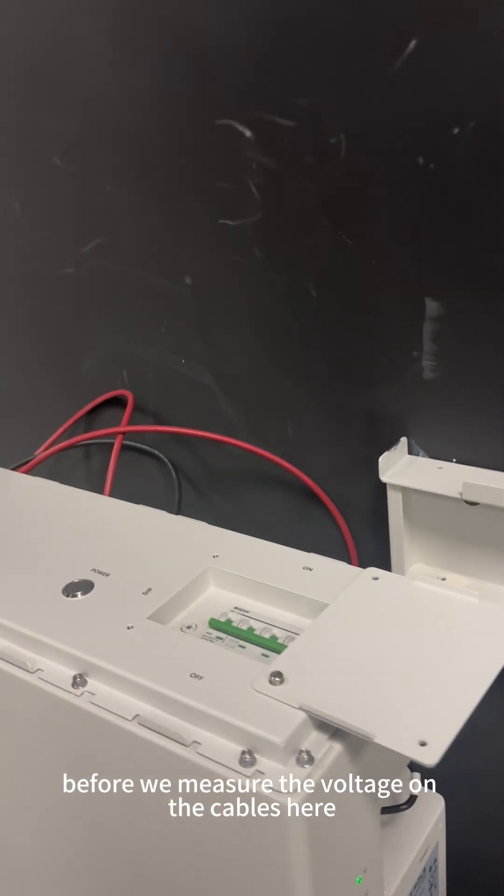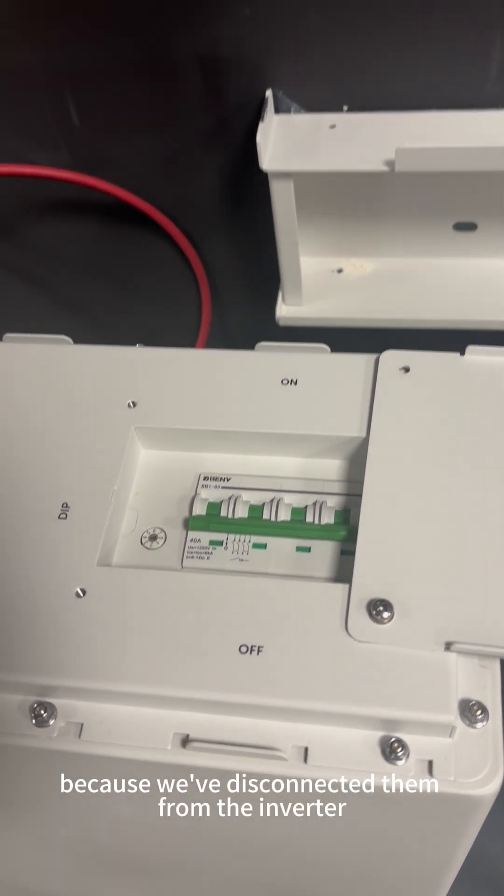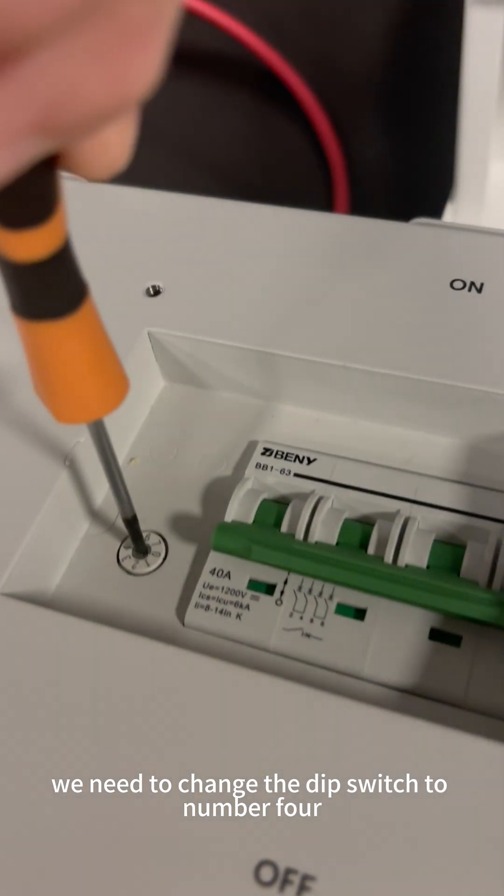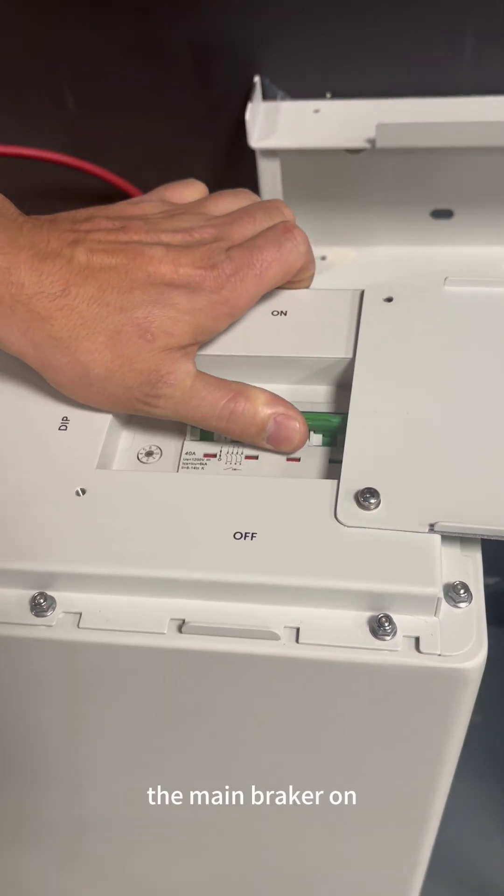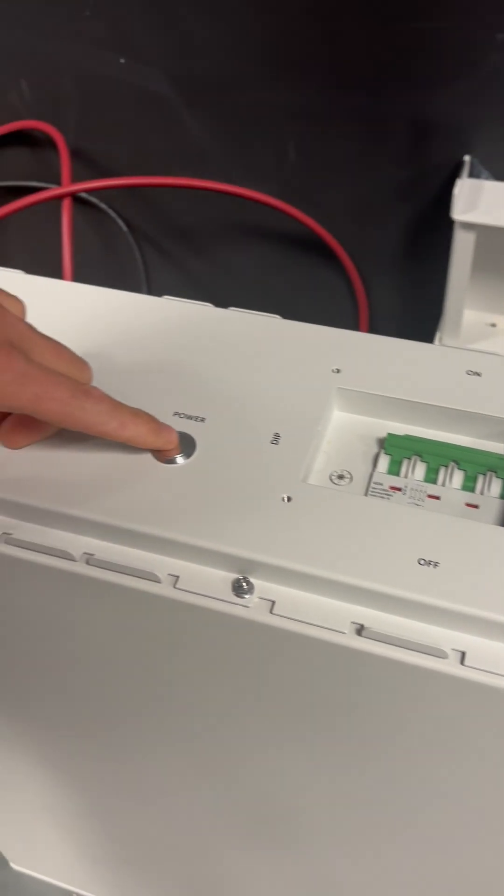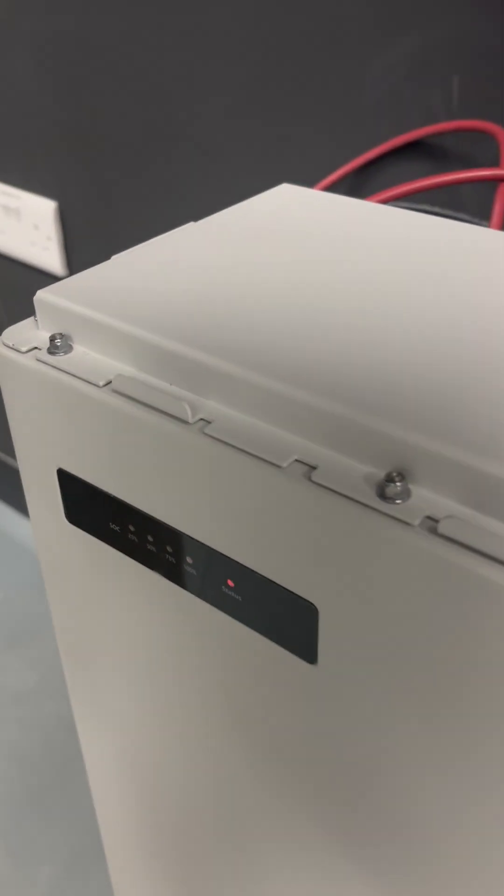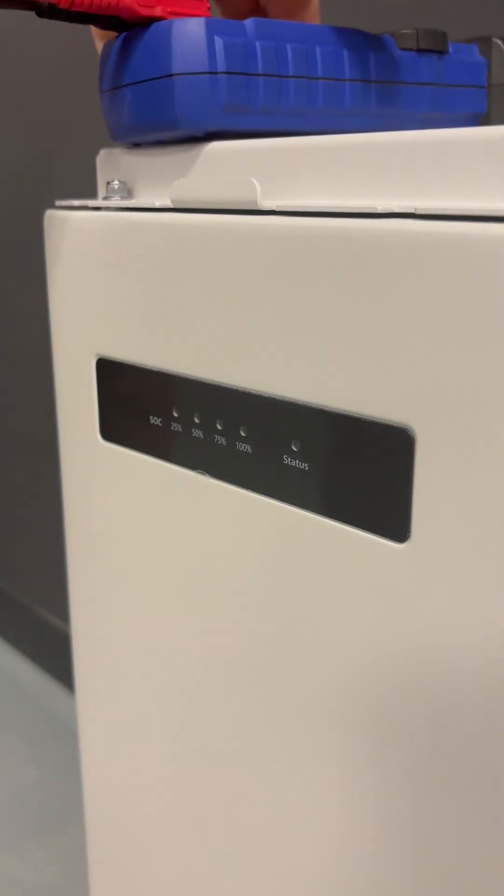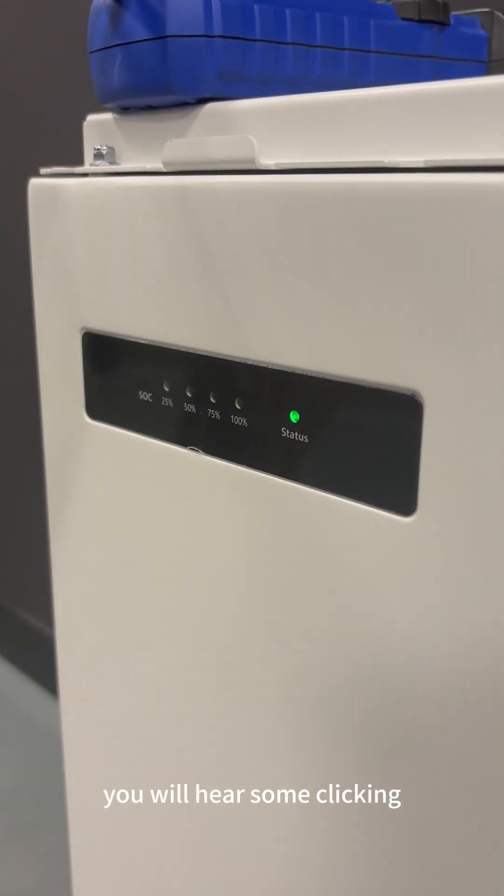Before we measure the voltage on the cables here, because we've disconnected them from the inverter, we need to change the dip switch to number four. Then we need to turn the main breaker on, press the power button. We need to get a DC voltage tester and please make sure that the battery is fully on, you will hear some clicking.